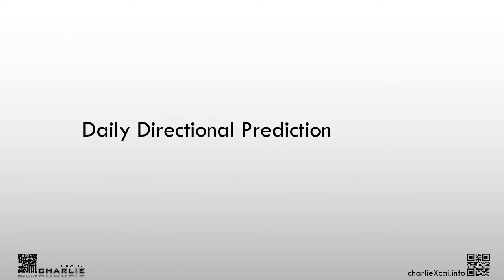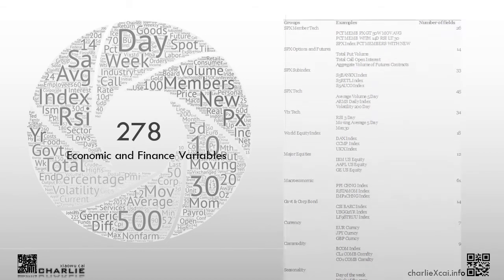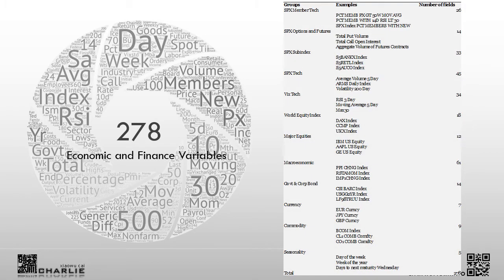Starting with our research design, we aim to predict the daily directional changes of the VIX index. We start by looking for economic and finance variables that are relevant. To this end, we find 278 variables including technical and fundamental variables, some macroeconomic variables, and other international financial market data.